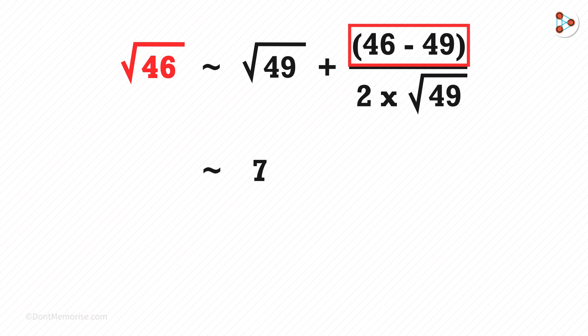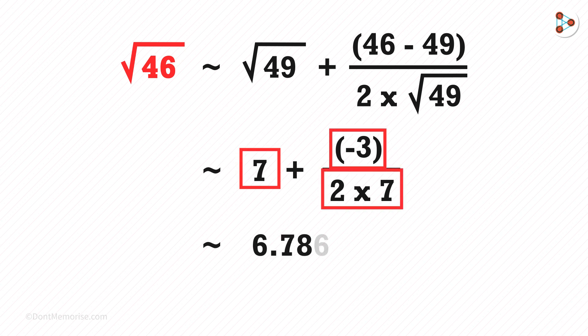So here, the numerator will be negative 3 and the denominator will have 2 multiplied by 7. By solving 7 minus 3 over 14, we get this answer.